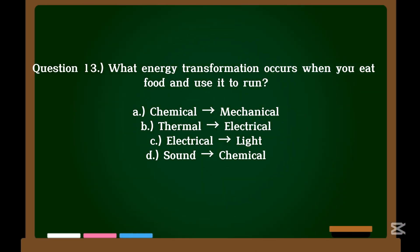Question 13. What energy transformation occurs when you eat food and use it to run? A. Chemical → mechanical. B. Thermal → electrical. C. Electrical → light. D. Sound → chemical.